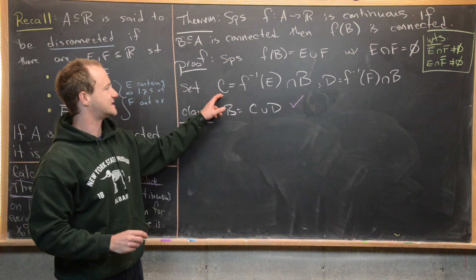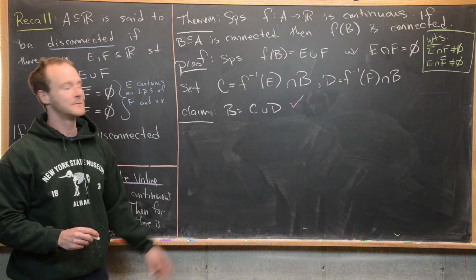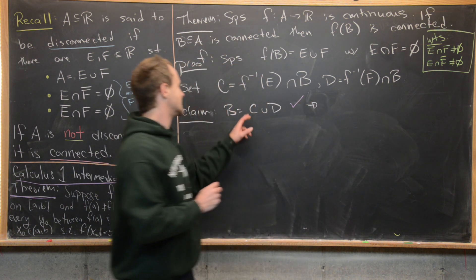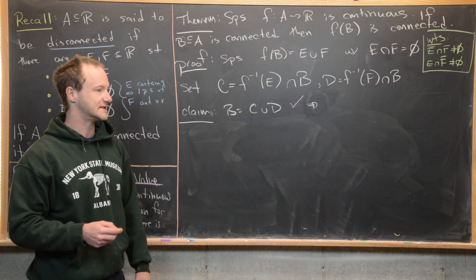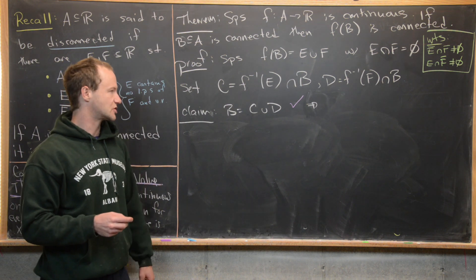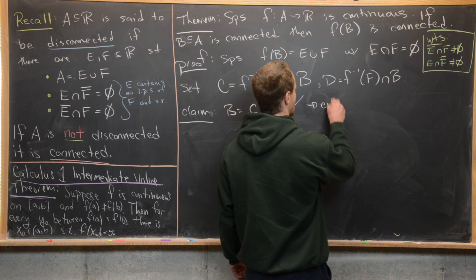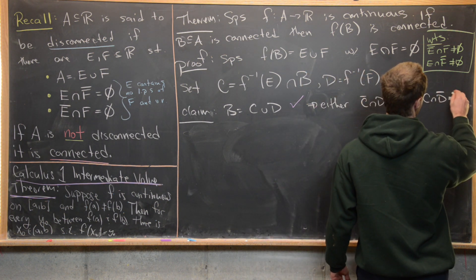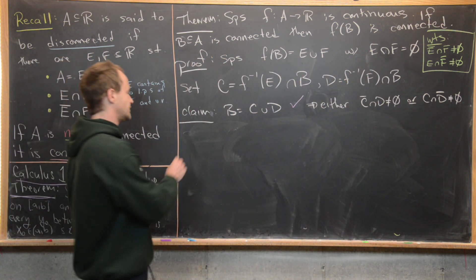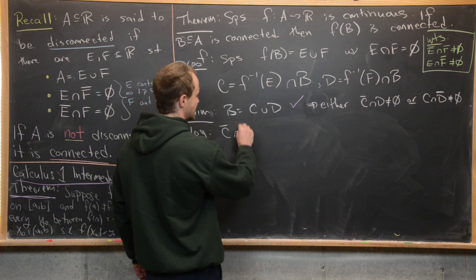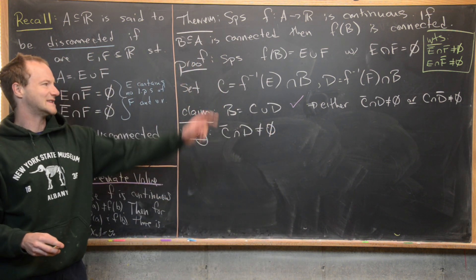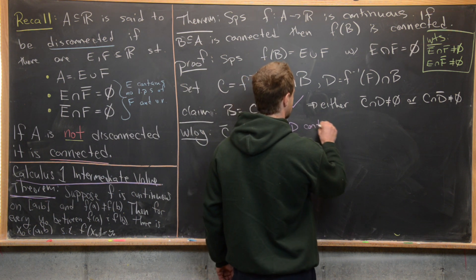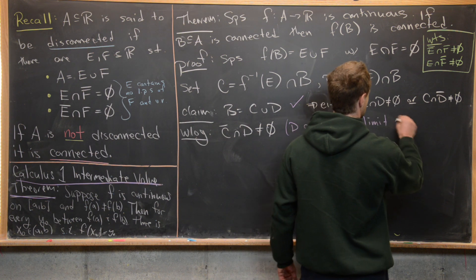We constructed sets C and D related to our function F whose union is B, which we assumed to be connected. Since B is connected, either C̅ ∩ D is non-empty or C ∩ D̅ is non-empty. Without loss of generality, assume C̅ ∩ D is non-empty. This means D contains a limit point of C, so there exists a sequence {Xₙ} totally contained in C such that Xₙ → X, where X is inside D. Note also that X is inside C̅.